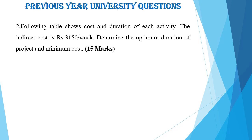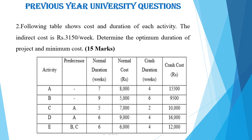The second question is a numerical problem. The following table shows the cost and duration of each activity. The indirect cost is given as rupees 3,150 per week. Determine the optimum duration of project and the minimum cost, which carries 15 marks. The data is shown in the table — activity and predecessor relationship, normal and crash cost, and normal and crash duration are all given. This is a problem related to crashing of networks.